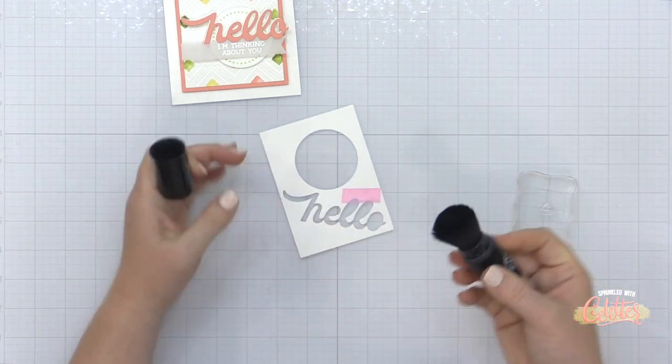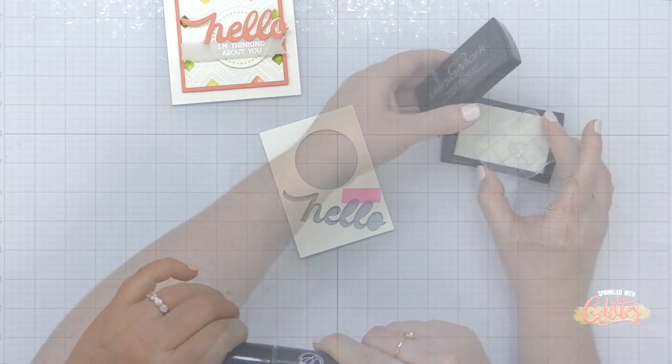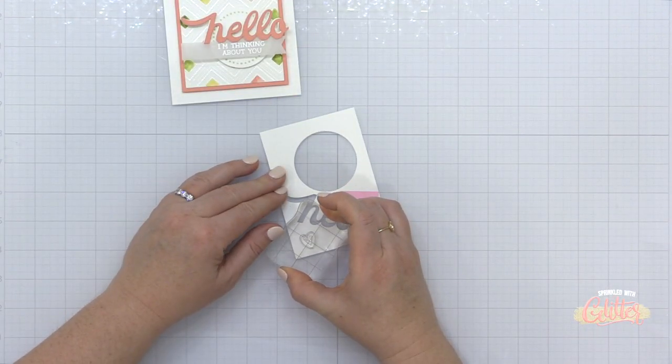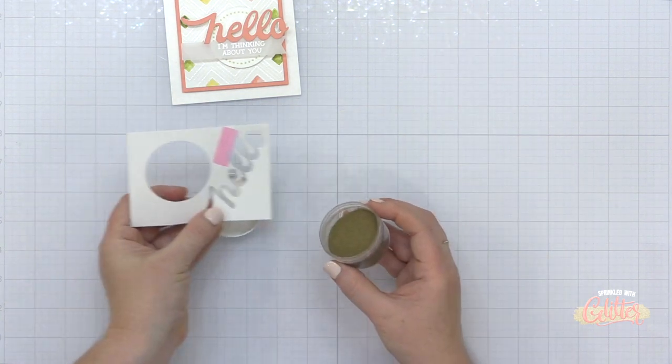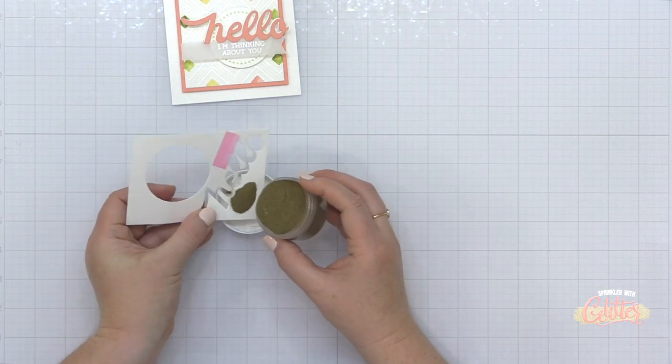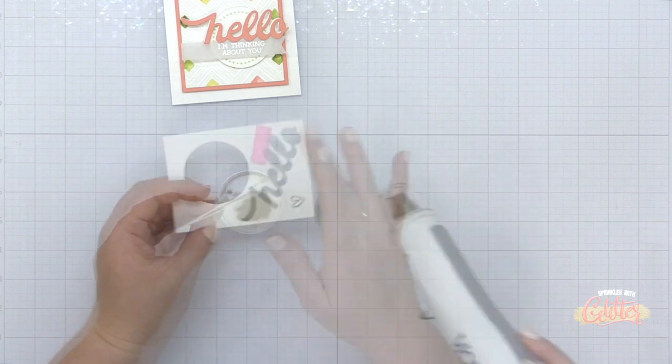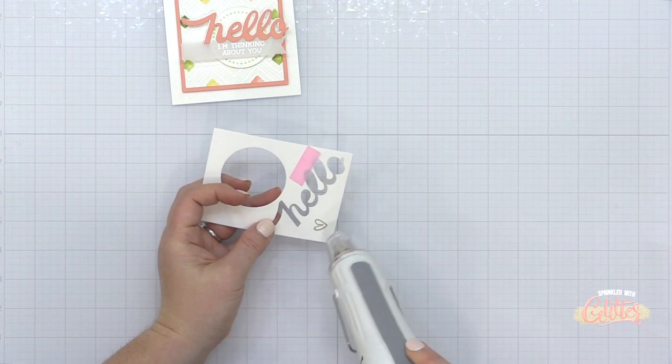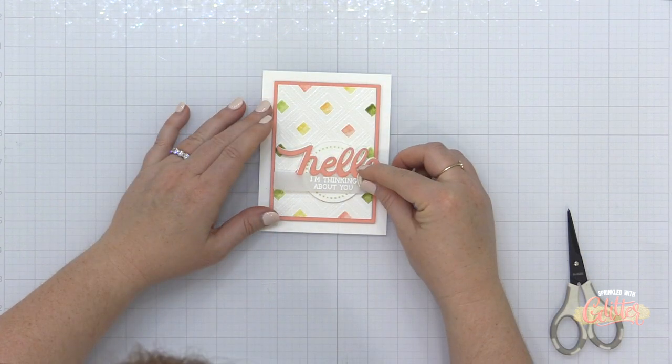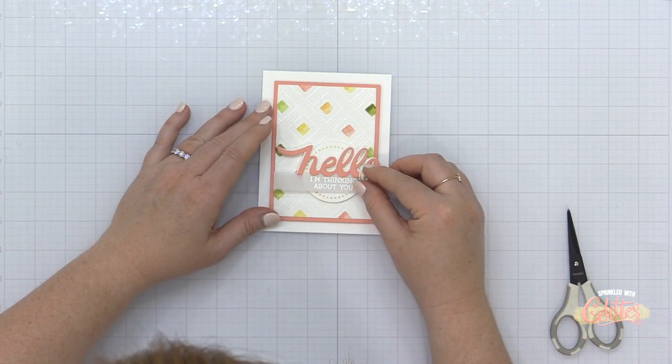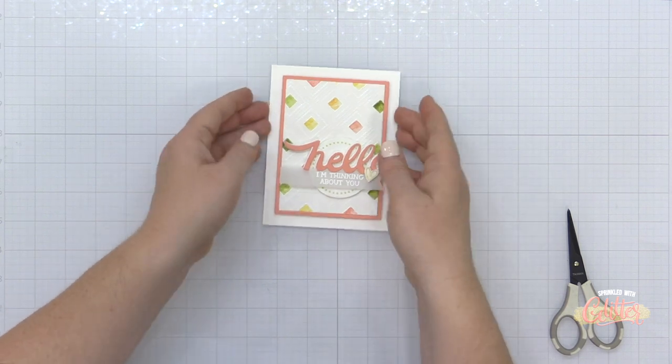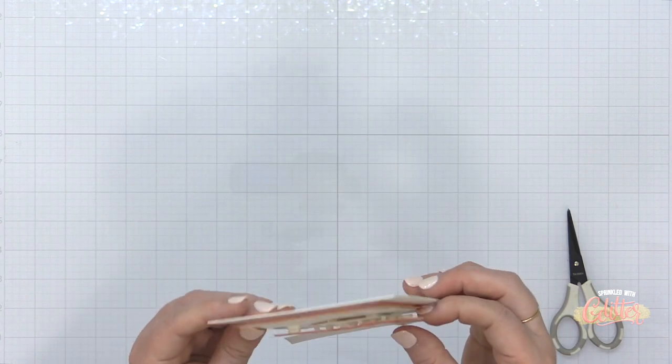Now I felt like there needed one more little accent. So I'm taking this heart that's from the Every Occasion stamp set and I'm stamping it onto some white cardstock and adding some gold embossing powder. And I'm just going to heat set that embossing powder and then I'm going to fussy cut it out and add it to my sentiment here with a little foam adhesive just for a little accent.